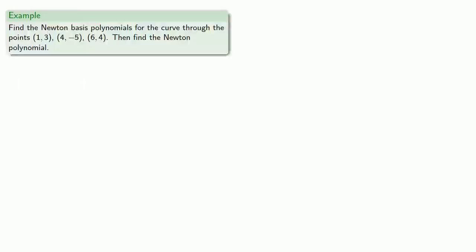Let's see how that works. So let's say we want to find our Newton basis polynomial for the curve that runs through these points, and then we'll find our Newton polynomial itself. So we have three points, so n is equal to two. It's always one less than the number of points because we start counting at zero. And so we have f0(x), which is always equal to one, and f1(x), and f2(x).